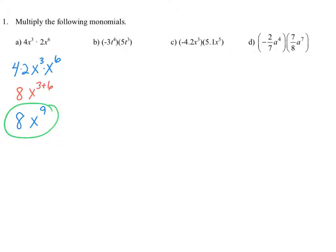For the second one, we're multiplying negative 3t to the fourth times 5t to the third. We multiply the coefficients: negative 3 times 5, and we multiply the variables: t to the fourth times t to the third. Negative 3 times 5 gives negative 15, and adding the exponents 4 plus 3 gives our final answer of negative 15t to the seventh power.